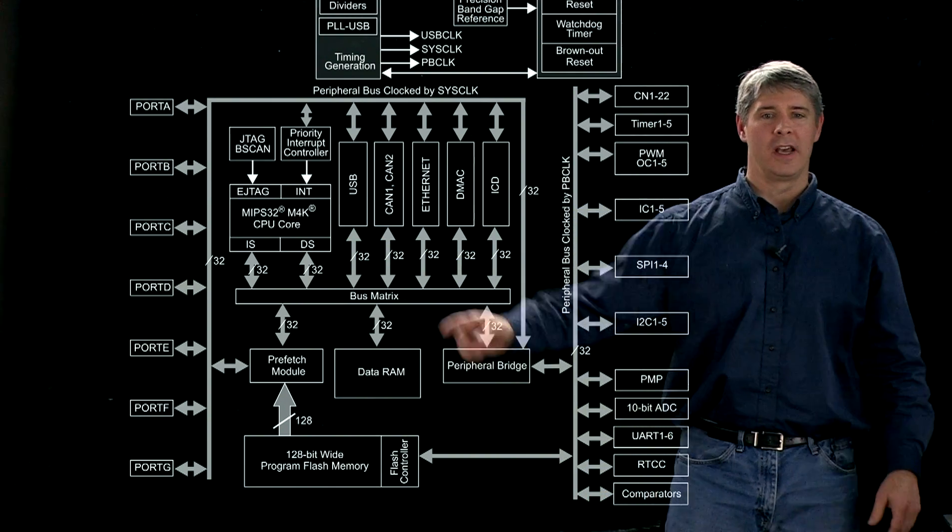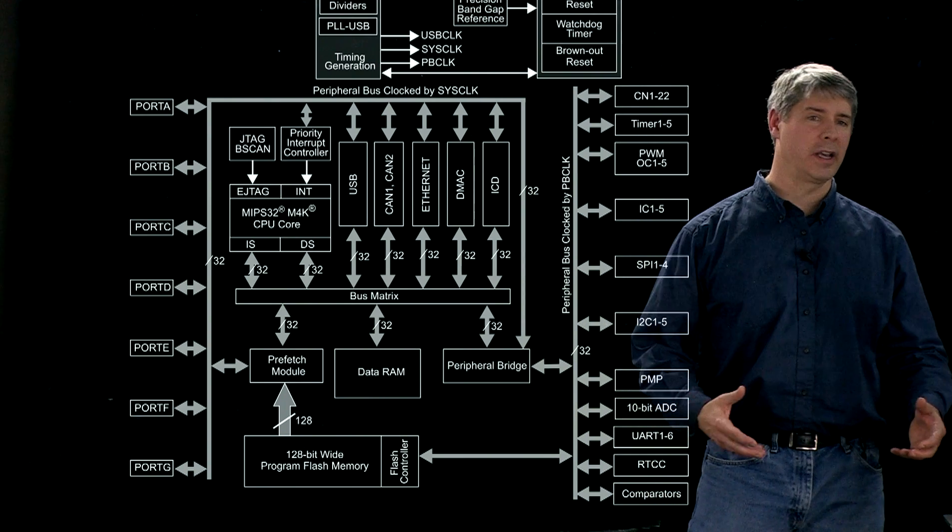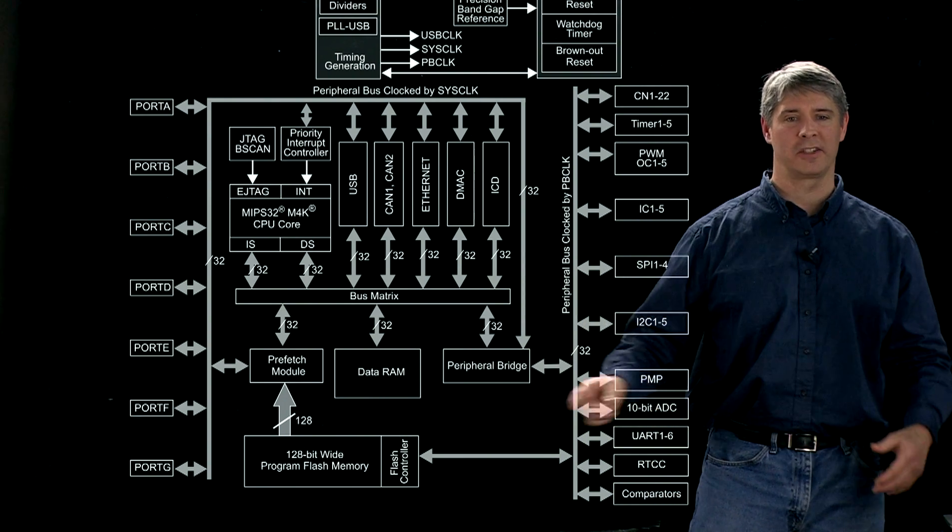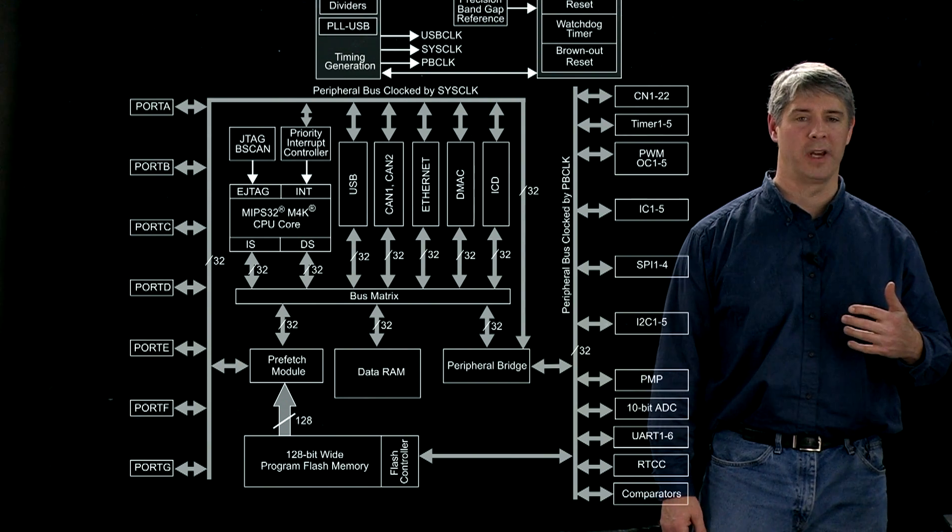So now when the CPU asks for the next program instruction, it checks to see if it's already sitting there in cache, and if so, it can get it immediately. Otherwise, if it's not there, it has to wait a couple of extra clock cycles for it to come in from flash memory.